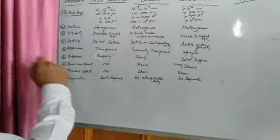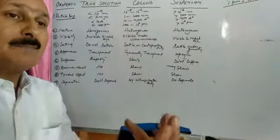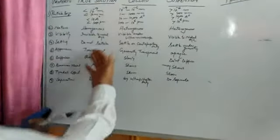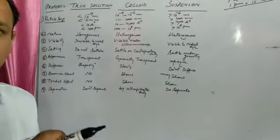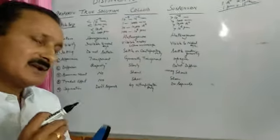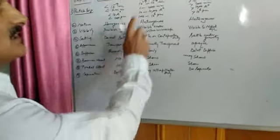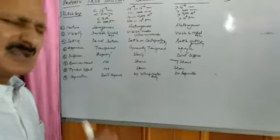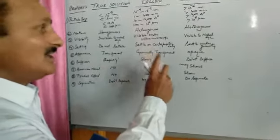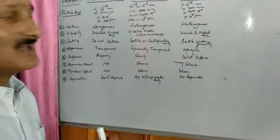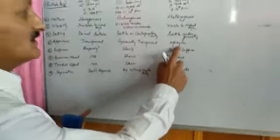Another point is appearance — how they look to us. True solutions are transparent in nature, since light can pass through them. Colloids are generally transparent, though some may be translucent. Suspensions are always opaque — that is, light does not pass through them.